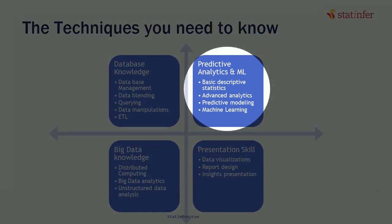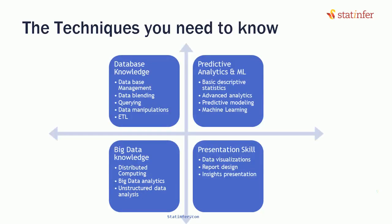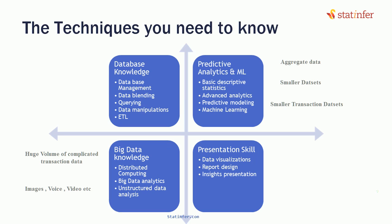The difference between predictive analysis and big data analysis is that predictive analysis happens either on aggregated data or on smaller data sets. We can hardly see predictive analysis running on transactional data, and even if it is, the data used will be a smaller one. Big data analytics, on the other hand, runs on very huge volumes of complicated transactional data. It's not just about the size of the data — the complexity or structure also matters, because the data may be images, voice, video, etc. Data analysis on these types of data, beyond conventional tools, is called big data analysis.